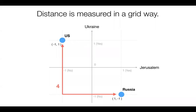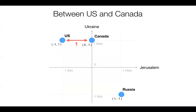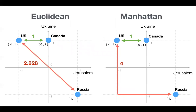That Manhattan distance between US and Russia is 4. And for Canada and the US, it's actually 1 — it happens to be that the straight line is on the grid line. When you compare Euclidean distance on the left and Manhattan on the right: US-Canada is basically the same in both cases. But US-Russia is different — Euclidean distance is 2.8, Manhattan is 4, much bigger. So Manhattan distance tends to emphasize differences more.